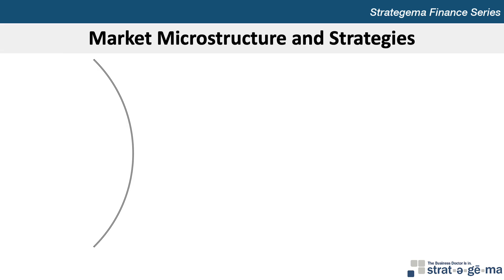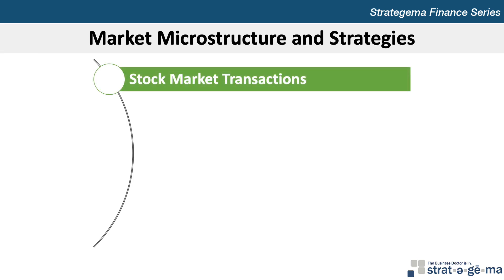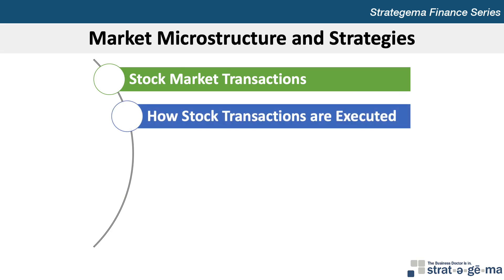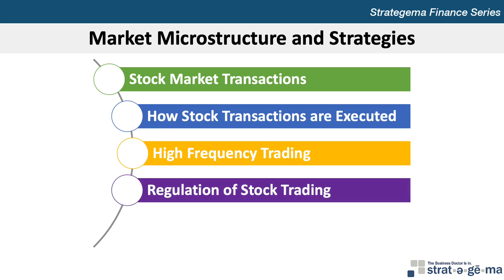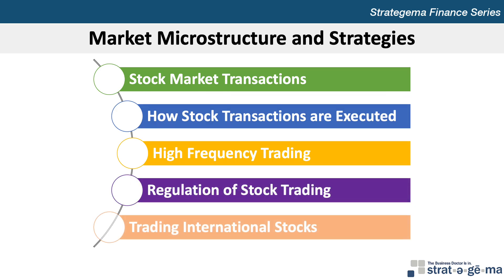Chapter 12 includes five key learning objectives. First, to describe the common types of stock transactions. Second, to explain how stock transactions are executed. Third, to describe high-frequency trading. Fourth, to describe the regulation of stock transactions. And fifth, to explain how barriers to international stock transactions have been reduced.